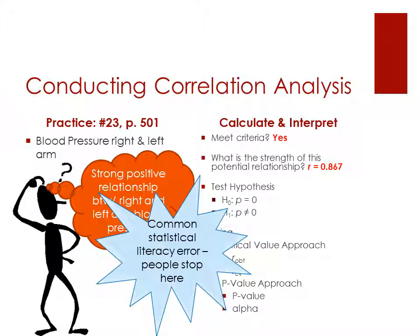However, a very important but commonly made statistical literacy error is to stop here. 0.867, I see this all the time when people are discussing correlation data, especially in comments and other general social media conversations, is they would say, see this shows this is a really strong relationship between the two.